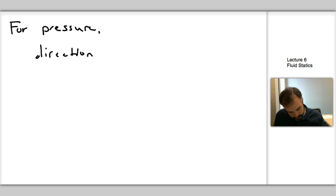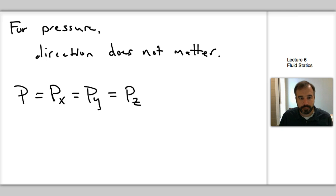Ultimately, what that means is for pressure, direction does not matter. And if we write that, we get P is equal to PX is equal to PY is equal to PZ. So pressure acts in all directions equally. That concludes this lecture on the definition of pressure. And in the next video, we will talk about the pressure variation in a fluid at rest. See you next time.